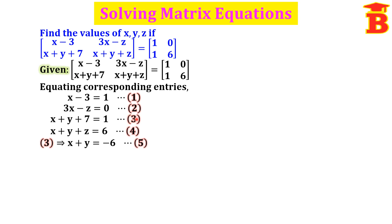From the third equation, x plus y equals 1 minus 7, which is minus 6. Take this as equation 5. Now from equations 4 and 5, both have the term x plus y, so subtracting we can cancel x and y. Equation 4 minus equation 5 gives z equal to 6 plus 6, that is 12.